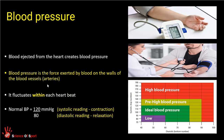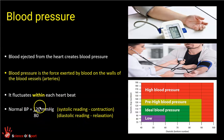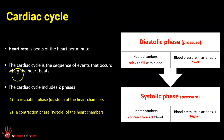Each heartbeat is a contraction and a relaxation phase. Going back to those blood pressure numbers — the higher number is the systolic reading, which is the pressure exerted on the walls of the arteries when the heart contracts. The lower pressure value is the diastolic reading, when the heart is relaxing and filling. Systolic and diastolic refer to blood pressure readings — the contraction reading and the relaxation reading — but they also totally relate to what the heart does in the cardiac cycle. A standard heart rate is about 72 beats per minute. Each heartbeat is a relaxation and a contraction phase of the heart.